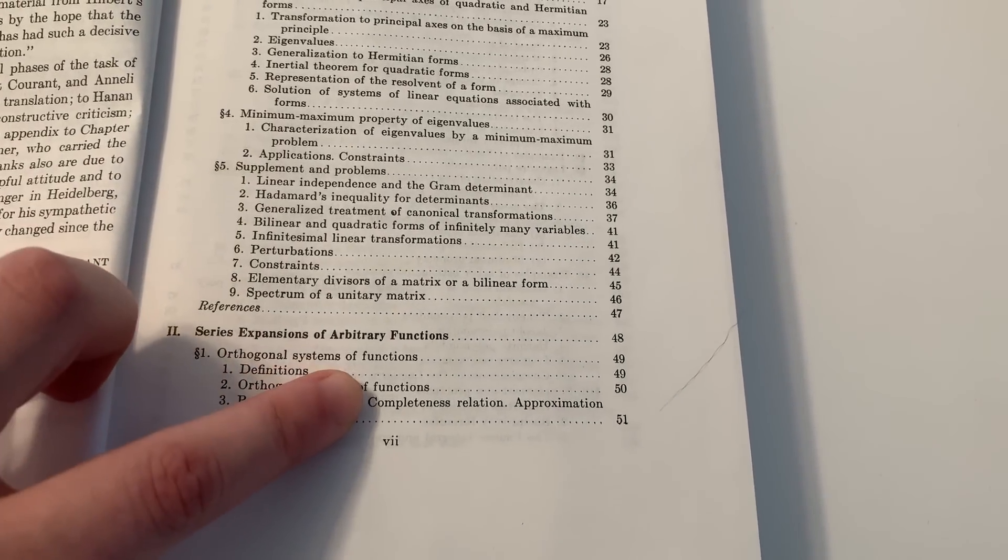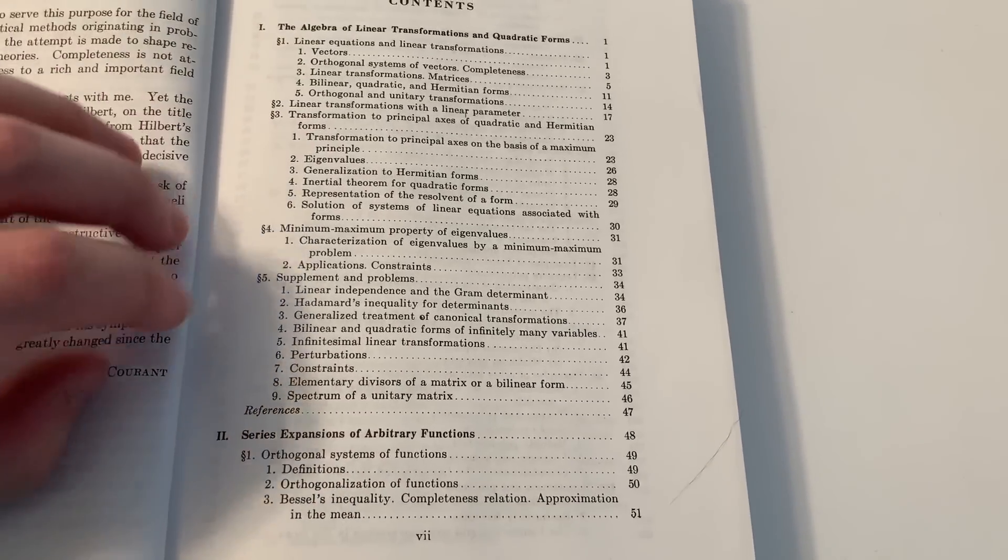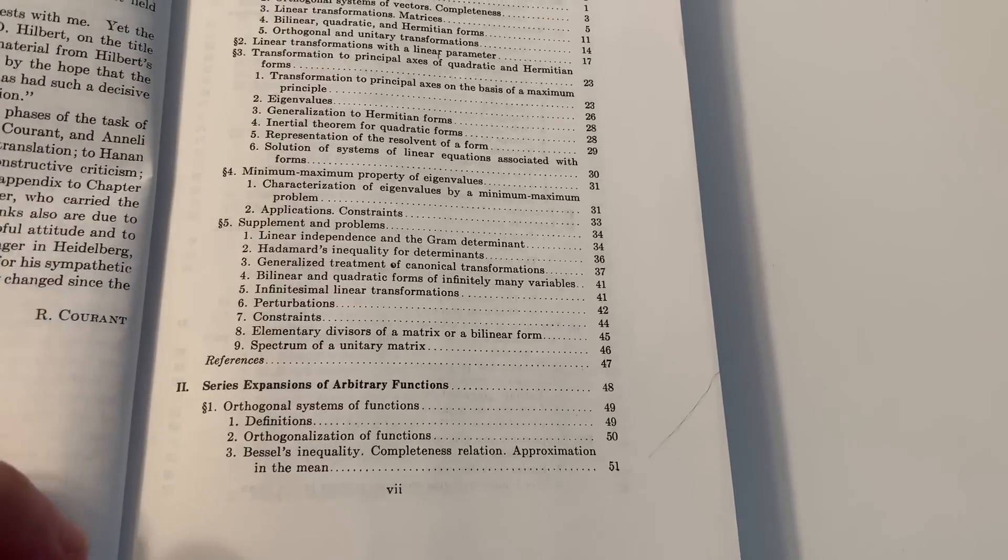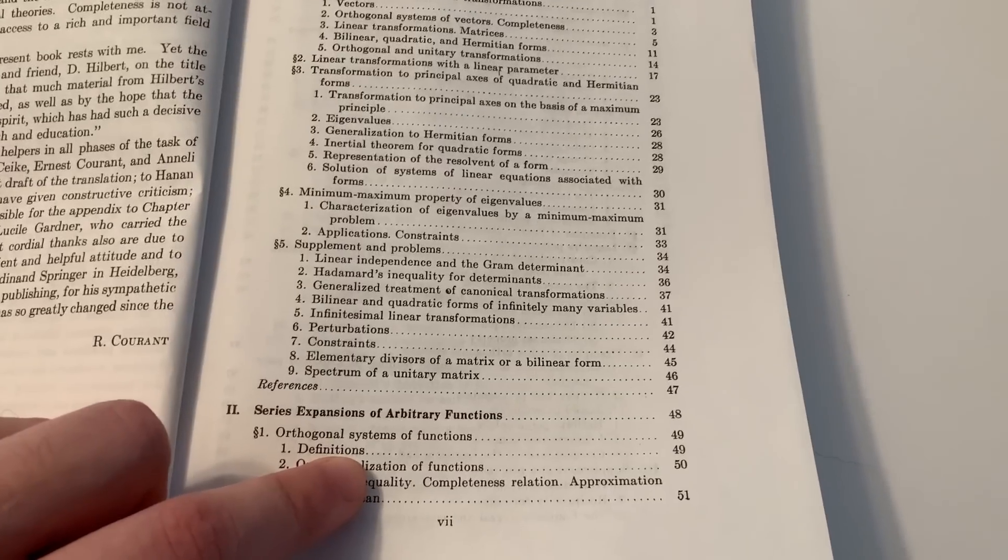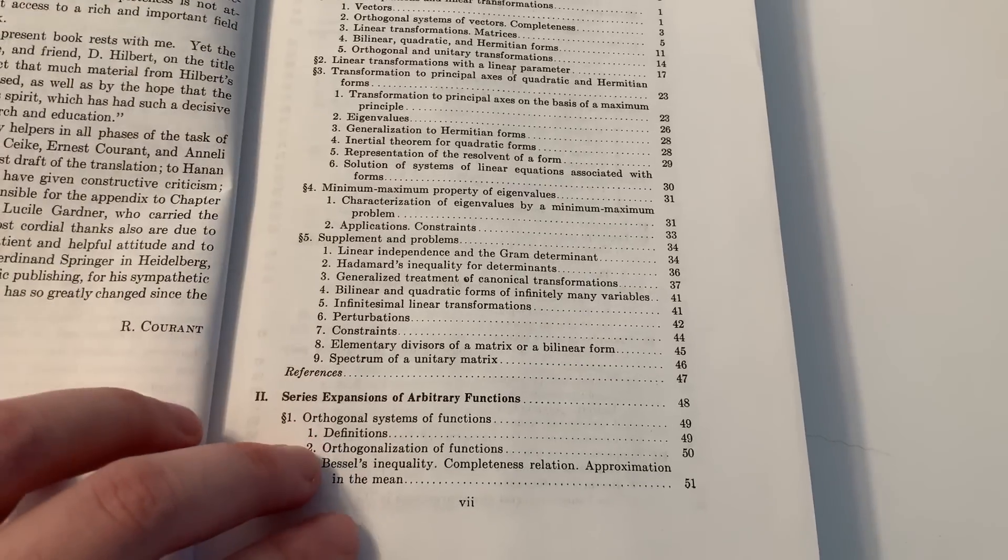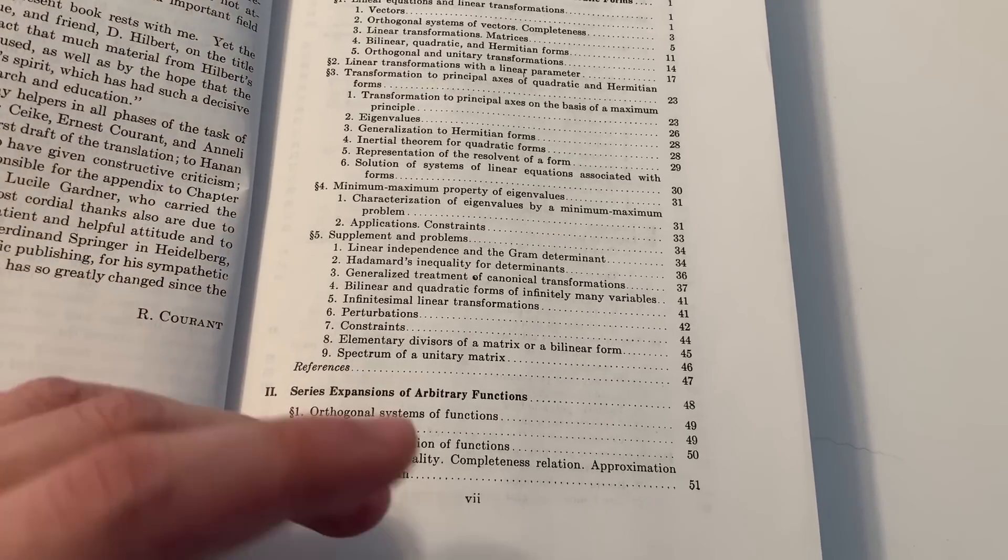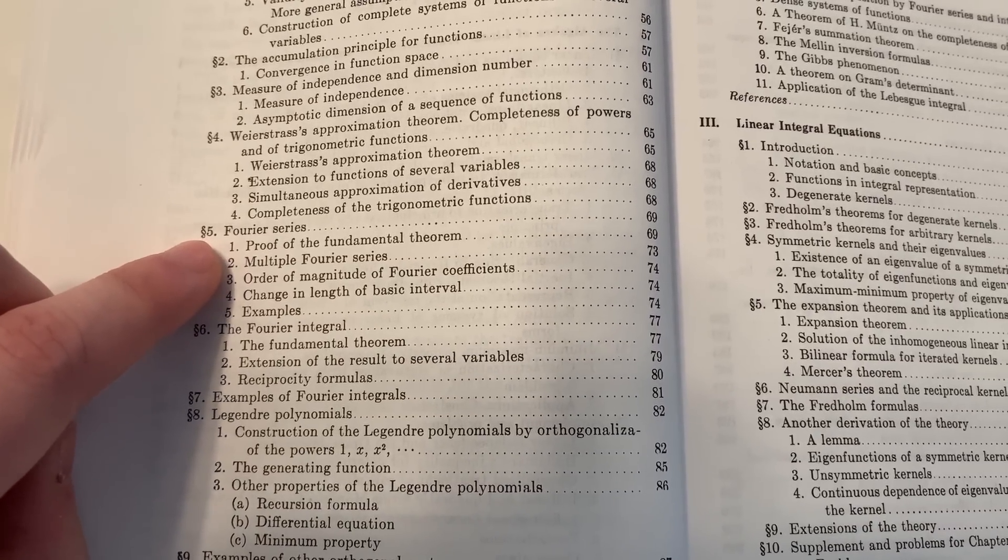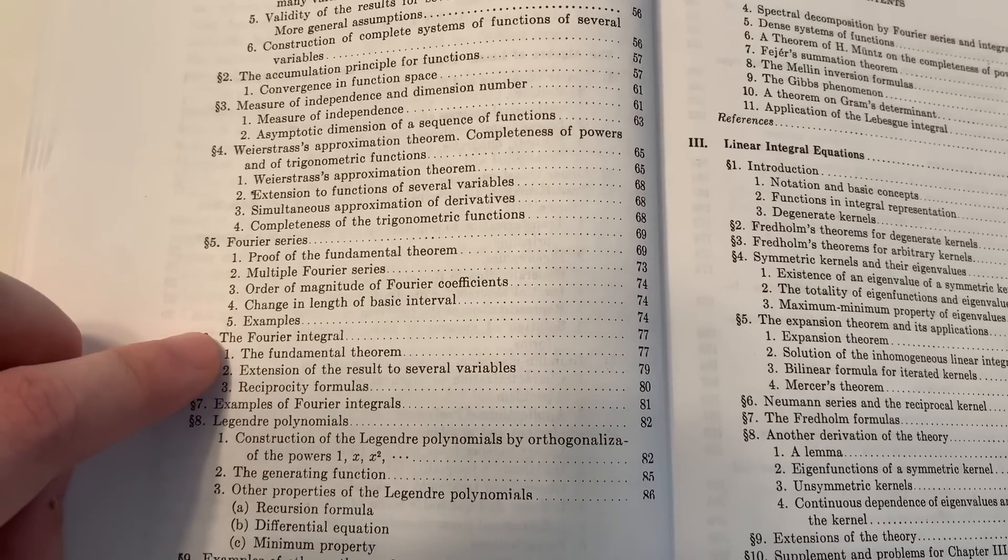The first chapter deals with the linear algebraic aspect of eigenvalue problems. Series expansions of arbitrary functions. Orthogonal systems of functions. So in linear algebra, we solve eigenvalue problems in finite dimensional vector spaces. And here, in chapter 2, a close analogy takes place in an infinite dimensional setting. Orthogonal systems of functions are not only indispensable for quantum mechanics. This is also the basis of studying many problems in classical physics as well, such as wave propagations and heat transfer. And here, as you can see, we have Fourier series, which is arguably the most important orthogonal system of functions.